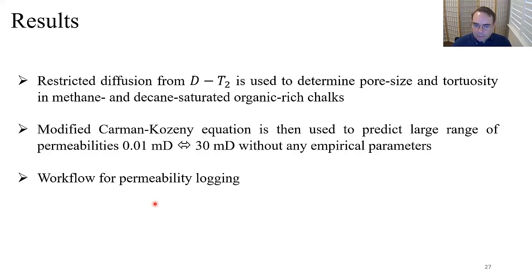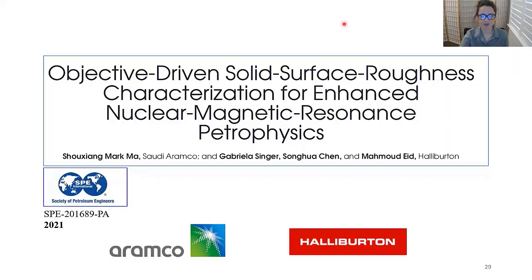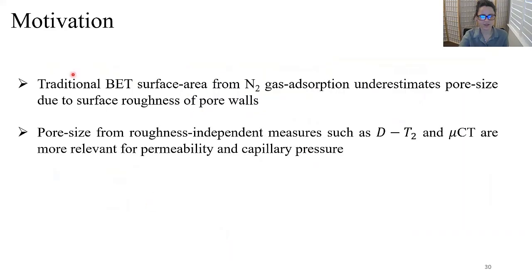This work is a collaboration between Aramco and Halliburton, recently published in the SPE Journal. The primary focus is characterization of pore-grain surface roughness and its applications in NMR pore analysis. BET surface area from nitrogen gas absorption underestimates pore size due to surface roughness of pore walls. Pore size from roughness-independent measurements such as DT2 and micro-CT are more relevant for permeability and capillary pressure. The integration of experimentally measured surface roughness to correct BET surface relaxivity is what is new in this study.